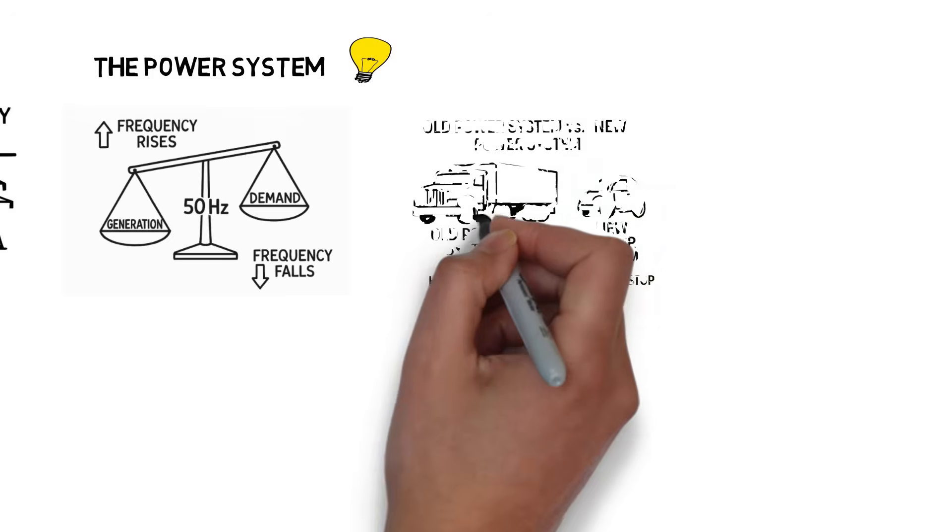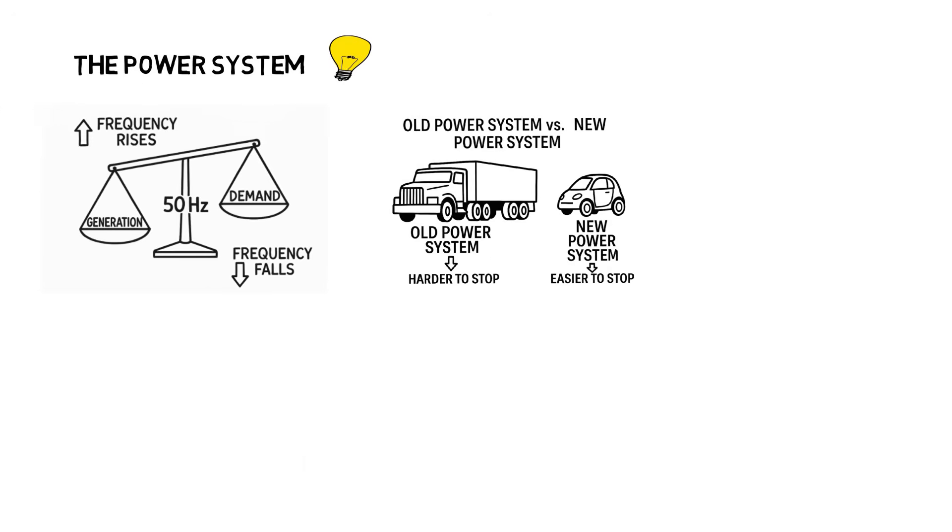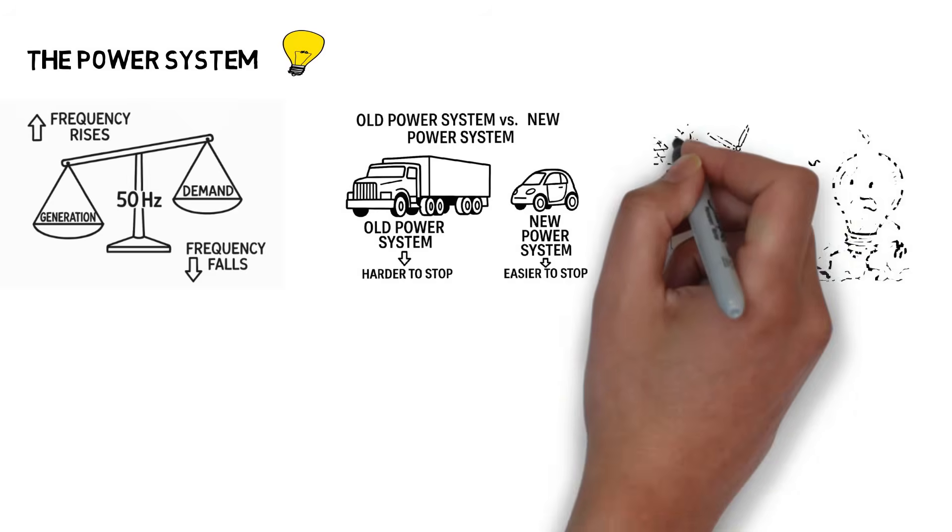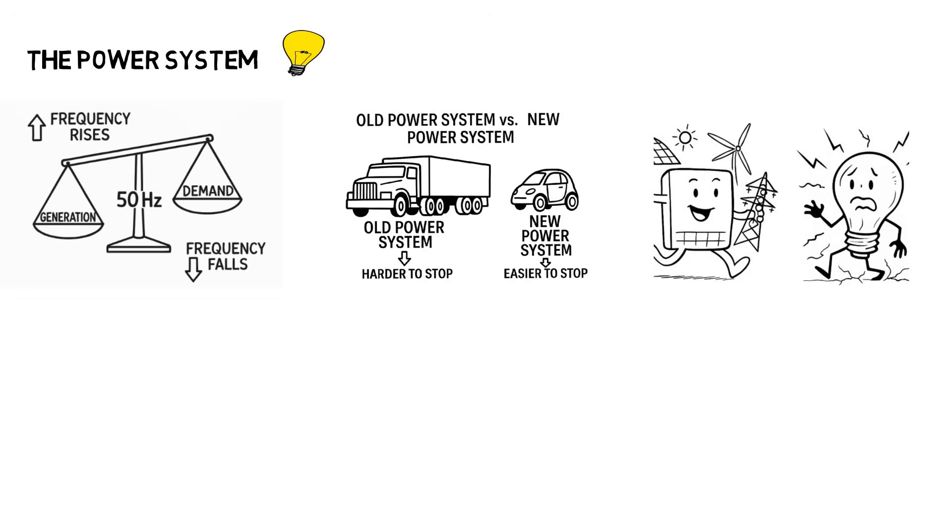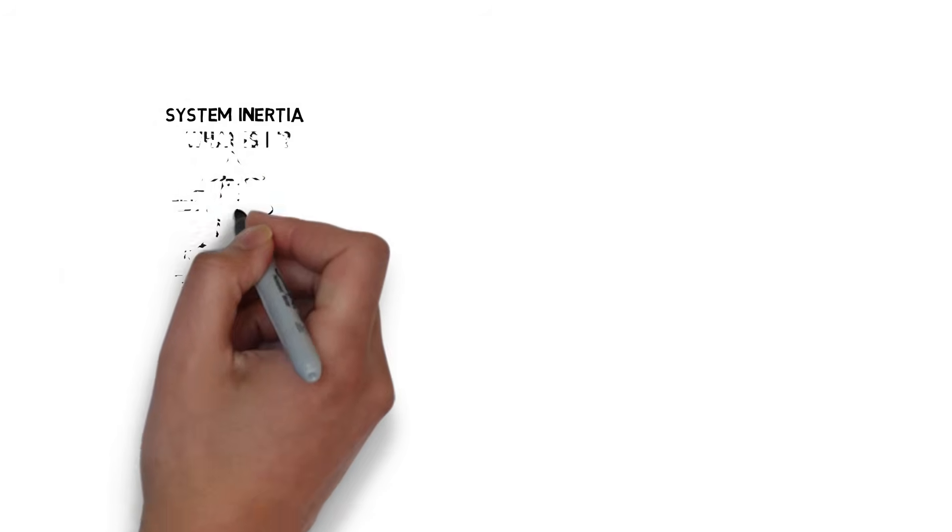And here's where inertia comes in. The old power grid was like a tank: massive, slow to move, but incredibly stable. Today's grid, powered by renewables, is agile, but fragile. So what exactly is system inertia? And how do we measure it? Let's break it down.